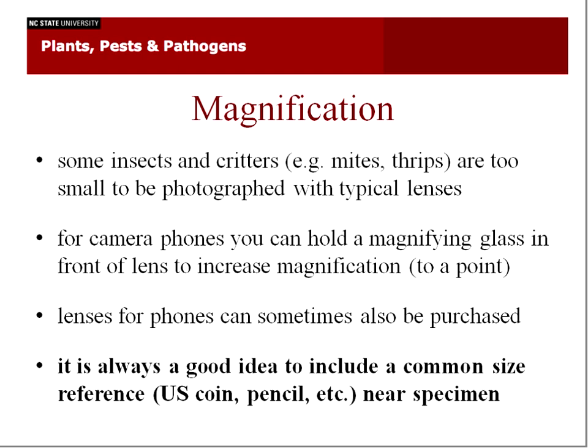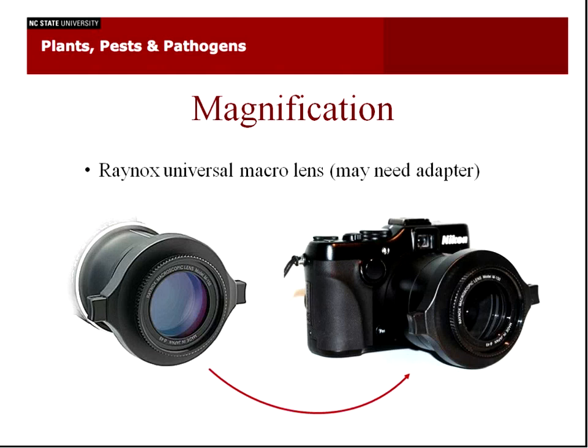Magnification is very important for insects because they're usually very small, and some features can help you identify them. Some insects like mites and thrips are too small to be photographed with typical lenses. For camera phones, you can hold a magnifying glass in front of the lens to increase magnification — even basic plastic magnifying glasses work. Lenses for phones can also be purchased online. With magnification, it's always good to include a common size reference like a coin or a pencil near the specimen, because the size can actually help the identification.